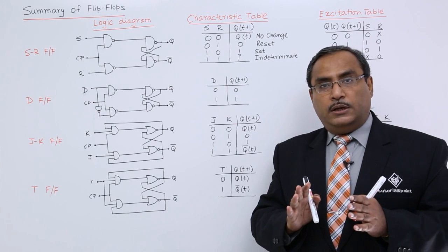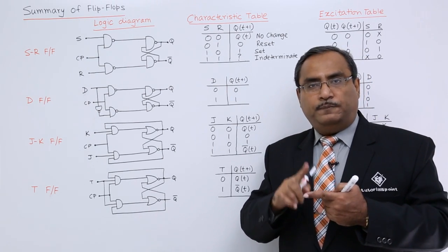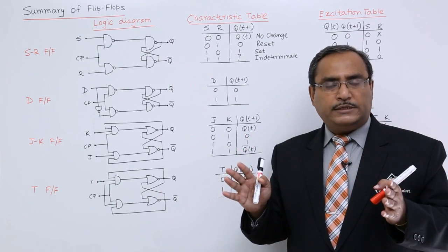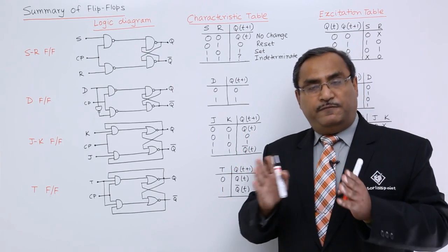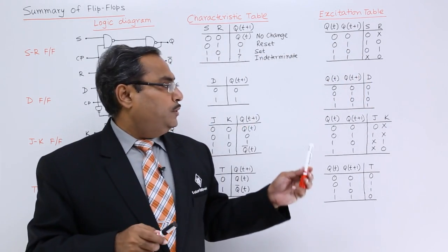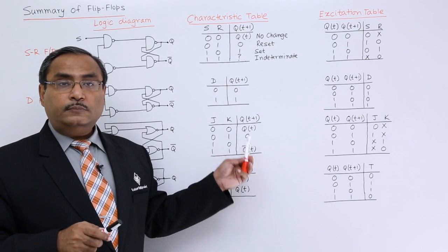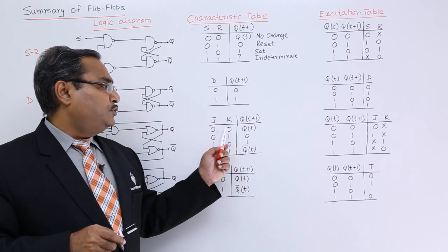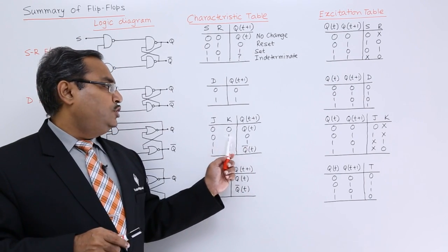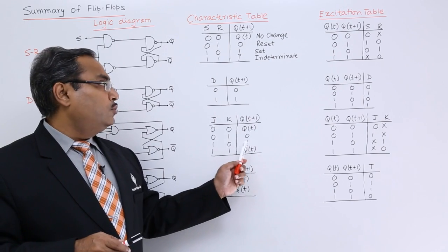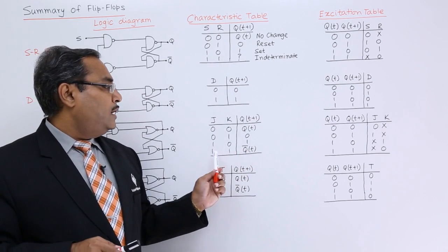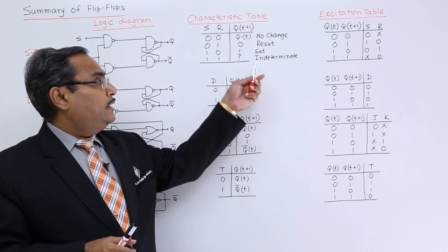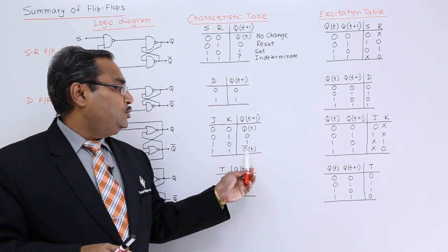In case of the JK flip-flop, it is a two-bit flip-flop because J and K — two bits — are there, so four input combinations are possible and it is free from the rest condition. Here is the respective characteristic table for JK flip-flop: for 0,0 it is Qt; for 0,1 it is 0; for 1,0 it is 1 — same as SR flip-flop. But for 1,1 it is Q-bar(t). So where SR had indeterminate, JK has Q-bar(t).